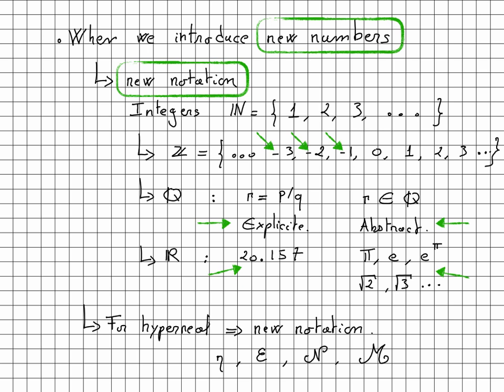The same is going to be true for hyperreals. Here too, we are going to need new notations. It can be abstract, and often an infinitesimal will be written eta or epsilon, while infinitely big numbers will be capital N or capital M. But it is good to know that the construction of hyperreals also allows us to come up with a more explicit representation of hyperreal numbers.